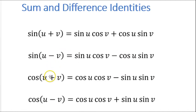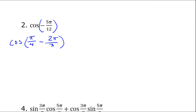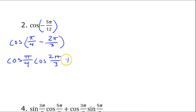Looking at our sum and difference identities, cosine of something minus something is cosine·cosine plus sine·sine. So what I have is cosine(π/4)·cosine(2π/3) — not negative 2π/3, just 2π/3 — plus sine(π/4)·sine(2π/3). Notice that the sign changes to plus.